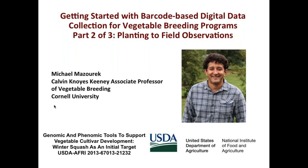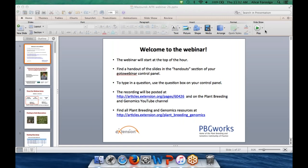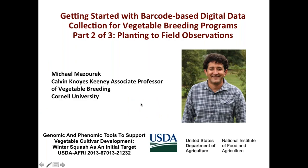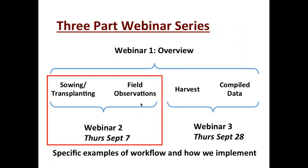Our presenter Michael Mazurek is the Calvin Noyes Kinney Associate Professor in Plant Breeding and Genetics at Cornell University. His breeding program focuses on improvement of vegetable crops for organic production systems and on identifying genes and developing tools to facilitate vegetable breeding progress. Thank you for joining us again today, Michael — I'm handing over screen controls to you.